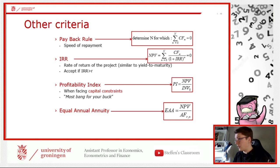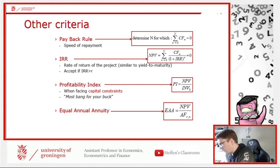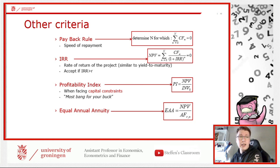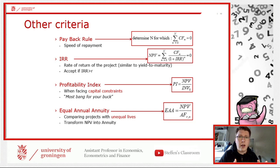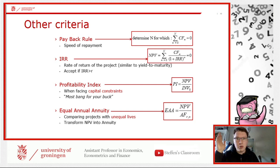What you get from the equivalent annual annuity is essentially the monthly repayments it would have been if the project were an annuity. This formula corresponds almost one-to-one with what you did in chapter four when solving for C using the annuity formula. You can find it on pages 278 and 279 of the book.